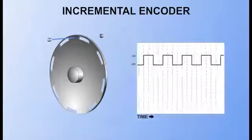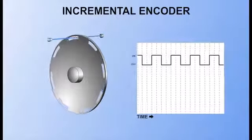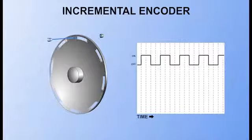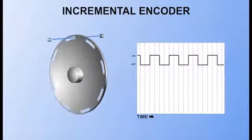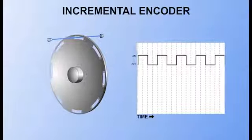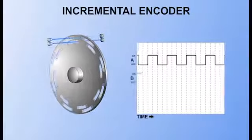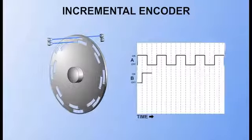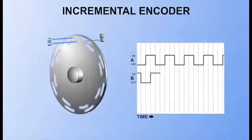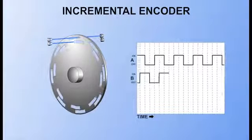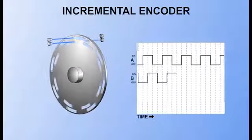A single track encoder may measure distance traveled, but not the direction of travel. To determine direction, a second light source and detector track is added to the encoder. The second track is offset from the first track as shown. By monitoring which sensor turns on first, the controller can determine if the yaw is clockwise or counterclockwise.